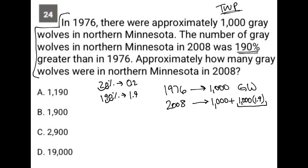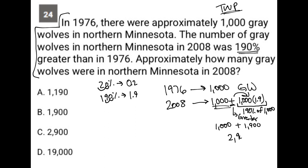So 1,000 times 1.9 represents 190% of 1,000. The plus just means that represents the greater part — we have what we started with, and we're increasing it by 190%. So we have 1,000, and 1.9 times 1,000 is 1,900. Altogether, that's going to be 2,900 gray wolves.